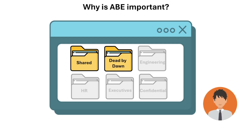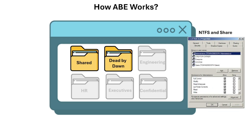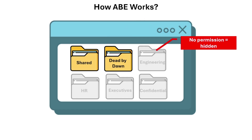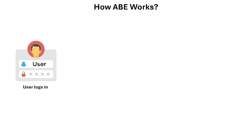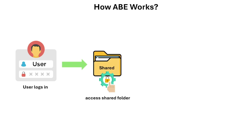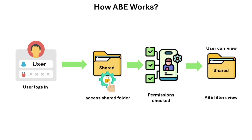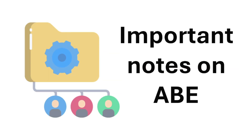Let's now talk about how ABE works. ABE relies on NTFS and share permissions — it filters the file or folder view based on user access. If a user has no permission, the folder is hidden. Here's the process flow: first the user logs in, next they try to access the shared folder, permissions are checked, and ABE filters the appropriate view based on those permissions.